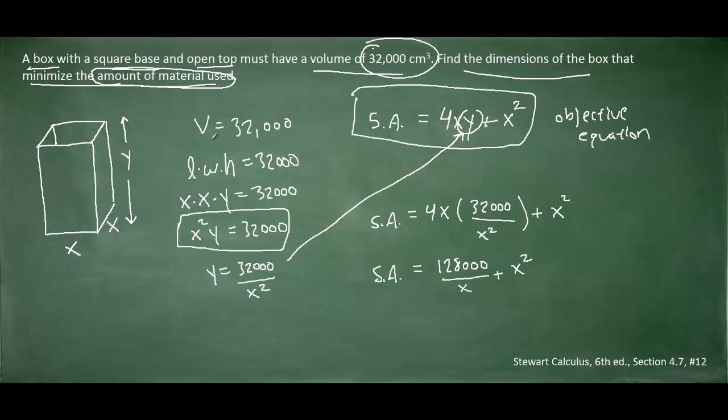Now before we differentiate, it's going to be helpful to bring the x from the denominator up to the numerator. Remember that when you do that, the power of x will change its sign. So in the denominator right now, it's x raised to the positive one. When we move it to the numerator, it'll be x raised to the negative one. We are now ready to differentiate this equation with respect to x. So we can say that we have SA prime, the surface area, the derivative of the surface area. And then we'll use a basic power rule to compute the derivative.